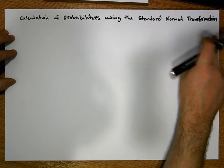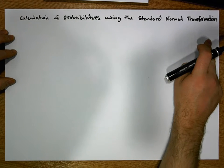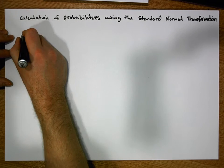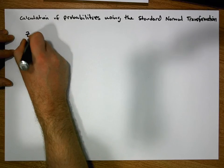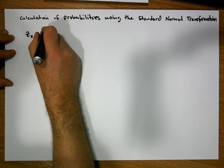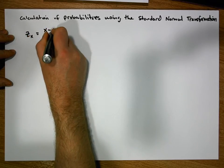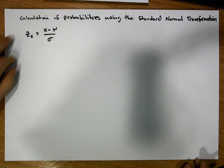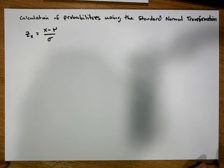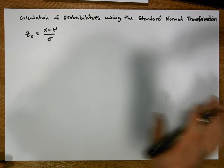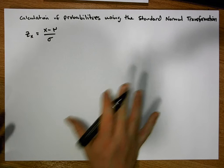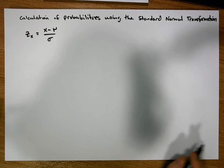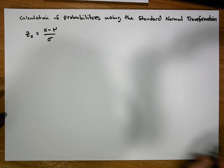We have defined the standard normal transformation to be z(x) = (x − μ) / σ. This particular video is going to deal with what we've defined to be type 1 probabilities.